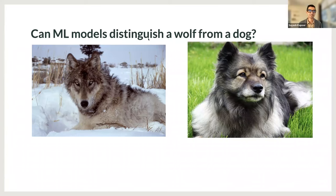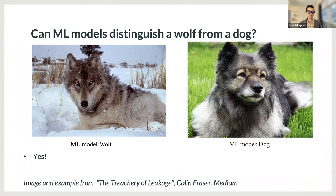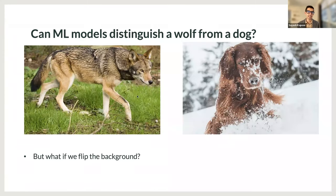I'm seeing a majority of yeses, though I do still see some nos. The answer is indeed yes. Given enough images of wolves on the left and dogs sitting on the grass, you would be able to build an ML model which can distinguish between these two species. But here's where things get more tricky. What happens if we flip the background — the wolf is no longer on an icy field, and the dog is no longer on a grassy field. The backgrounds have been completely switched.